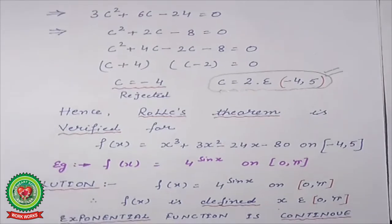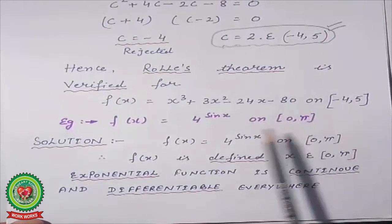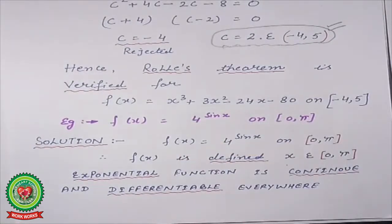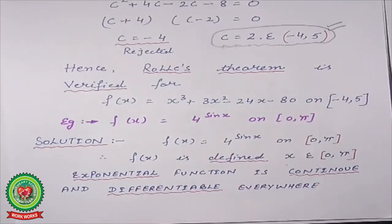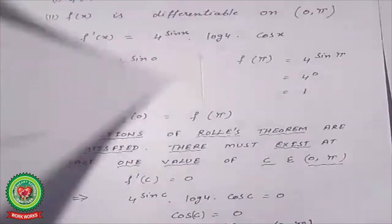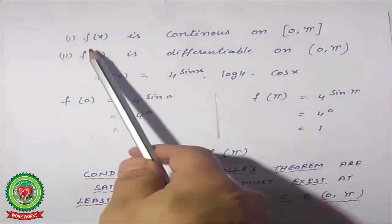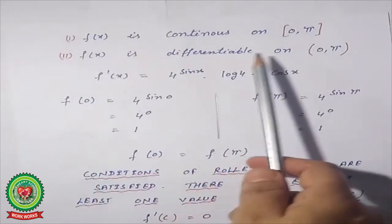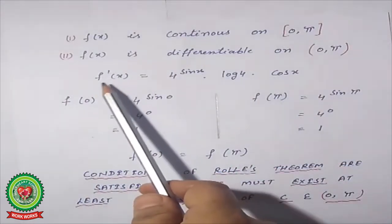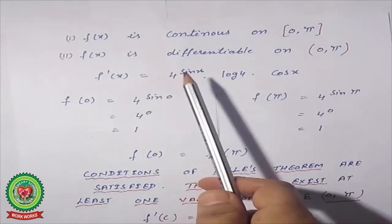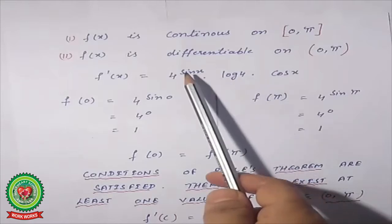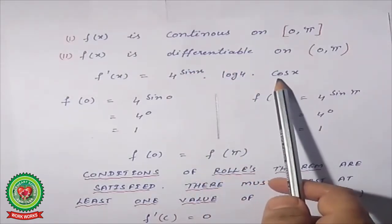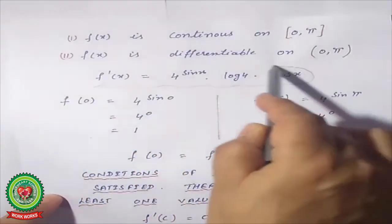Now I am taking one more example: f(x) = 4^(sin x) on [0, π]. Write down the statement. f(x) is defined for x belonging to [0, π]. This is an exponential function, which is continuous and differentiable everywhere. So: first condition — f(x) is continuous on [0, π]; second condition — f(x) is differentiable on (0, π). Now find the differentiation: f′(x) = 4^(sin x) · log(4) · cos(x).